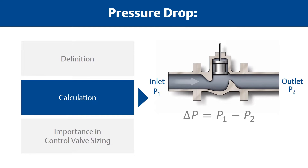Inlet or upstream pressure is shown as P1. Outlet or downstream pressure is shown as P2. P1 is measured two pipe diameters upstream of the valve. P2 is measured six pipe diameters downstream of the valve. Your process or instrumentation department will provide these variables.